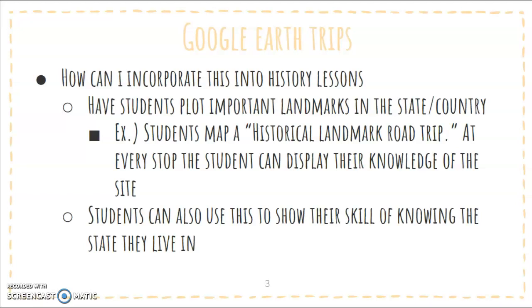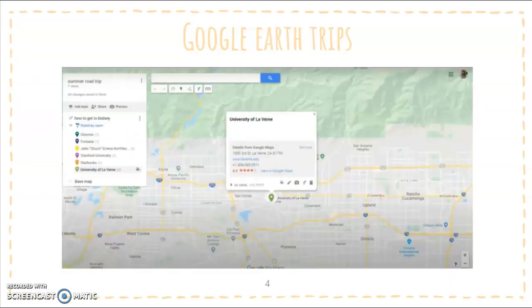For example, we live in California, so students could put Disneyland, Los Angeles, just different fun things they like to do here. To further demonstrate this, I decided to show a Google Trip I made. This is a fun one — it is a road trip up to Northern California.